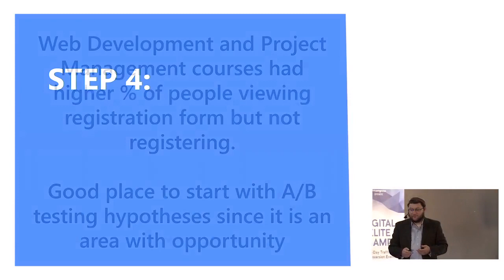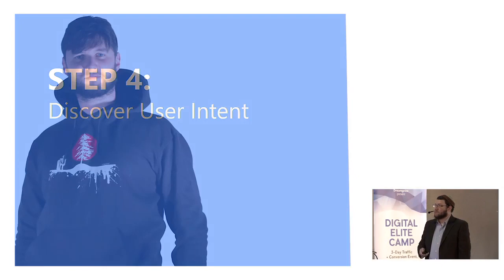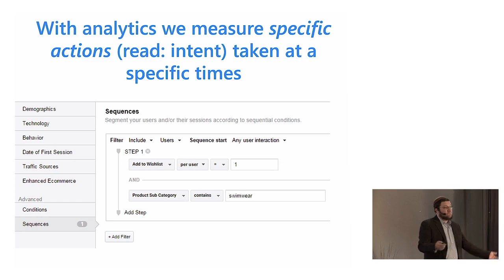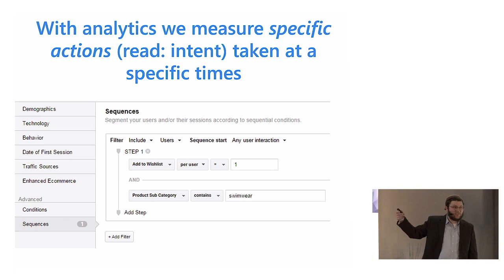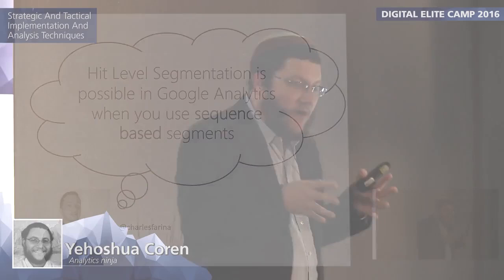Intent — this is piggybacking off of what I was talking about earlier. Here's a user who loves hoodies. He adds a hoodie to his cart, or he's looking for swimwear and adds swimwear to his wish list. But did you notice what type of segment this is? A sequence segment. This is important because of something called hit-level segmentation, which is only possible when using sequence segments.